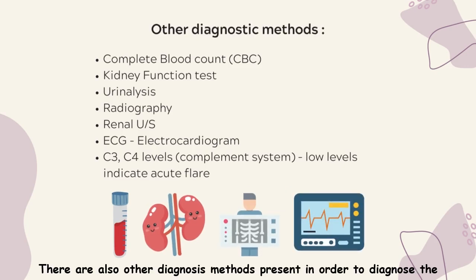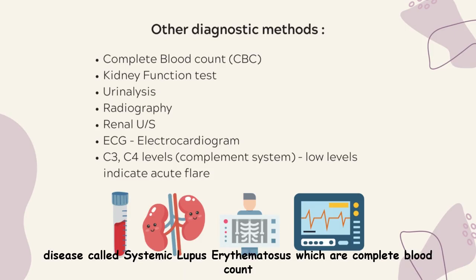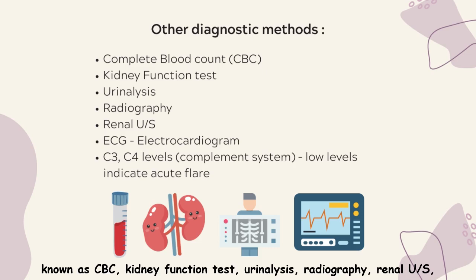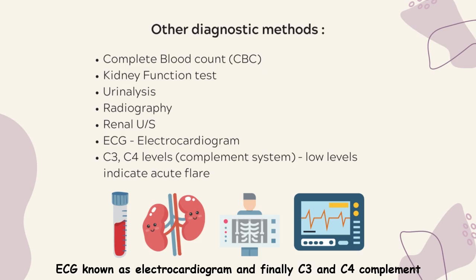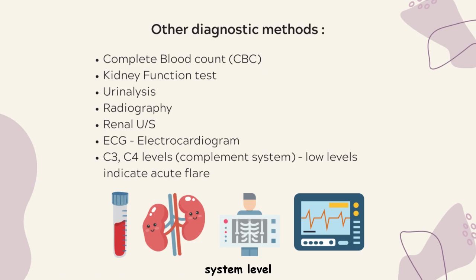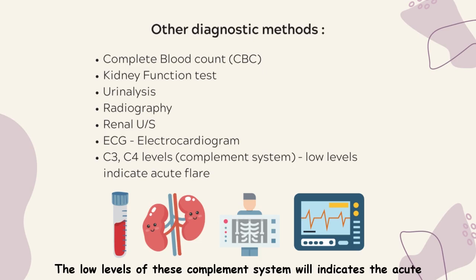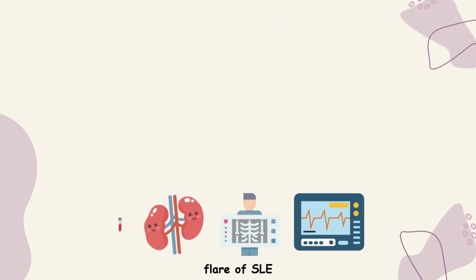Other diagnostic methods used to diagnose systemic lupus erythematosus include complete blood count (CBC), kidney function tests, urinalysis, radiography, renal biopsy, ECG (electrocardiogram), and C3 and C4 complement system levels. Low levels of complement system components indicate an acute flare of SLE.